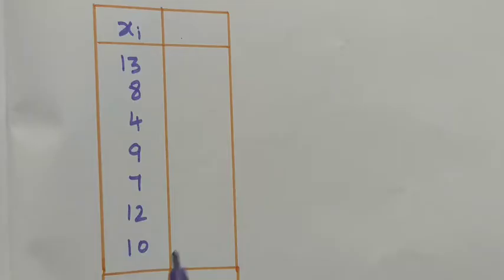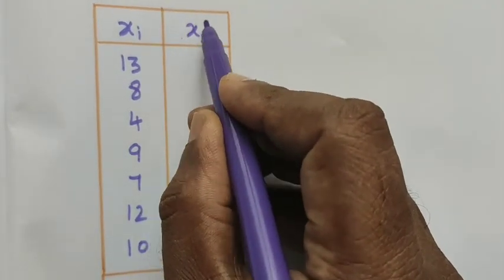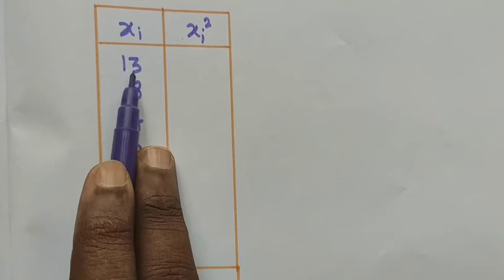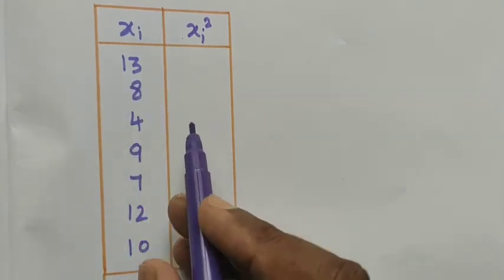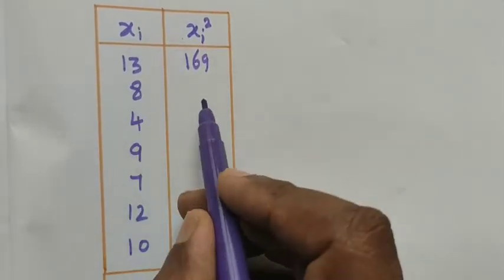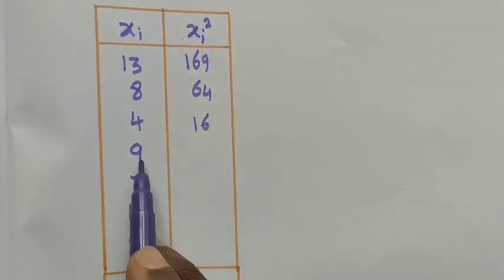For the direct method, we are squaring the given terms to find the standard deviation. First, the given data is xi, and then we want to find out xi square. The smaller numbers only, so we can directly square them. 13 square is 169, 8 square is 64, 4 square is 16.